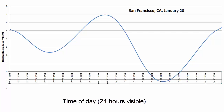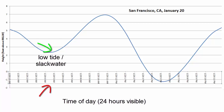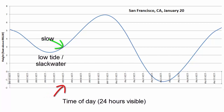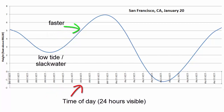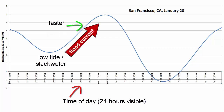If you were on the San Francisco coastline on January 20th and experiencing these tides, at 4:30 a.m. you would be experiencing a low tide, during which water would be neither rising nor falling. We call this slack water. After low tide, sea level would rise slowly at first, and then faster and faster. Water is flooding the land — we call this moving water a flood current.